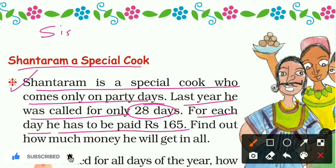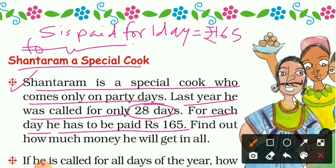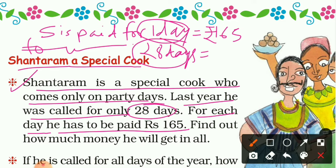Shantaram is paid for one day: 165 rupees. He works for 28 days. We are finding his salary for 28 days, and we are given the salary for one day, which is 165 rupees. Since 28 is more than one, we simply multiply the numbers.